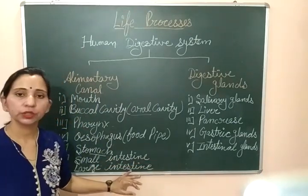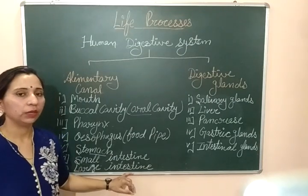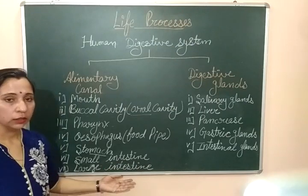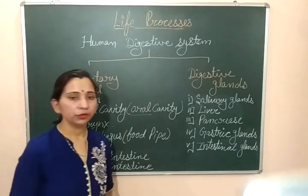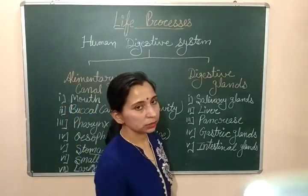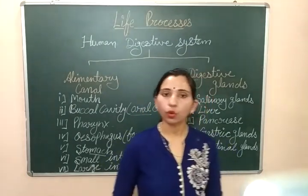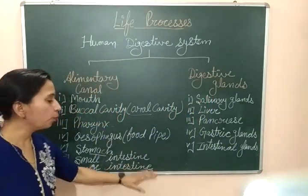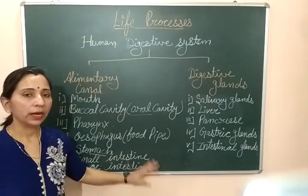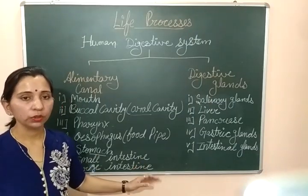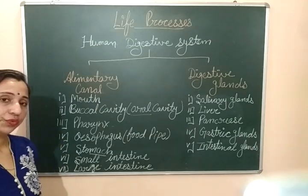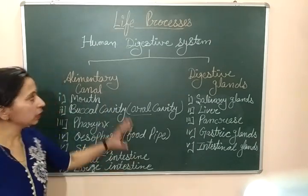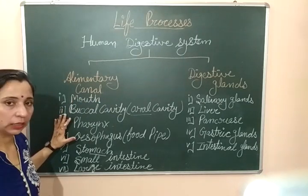The next part of the alimentary canal is the large intestine, which is the last part. It is also divided into three parts: cecum, colon, and rectum. After the large intestine, there is an opening to the outside of the body called the anus, through which undigested food is thrown out. This is the overview of our alimentary canal.